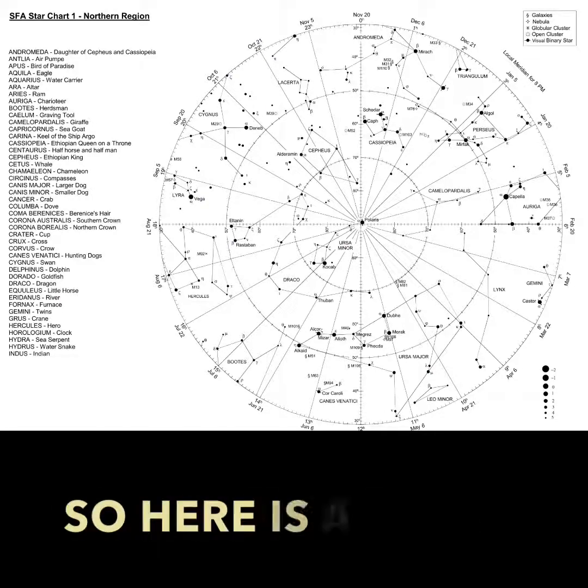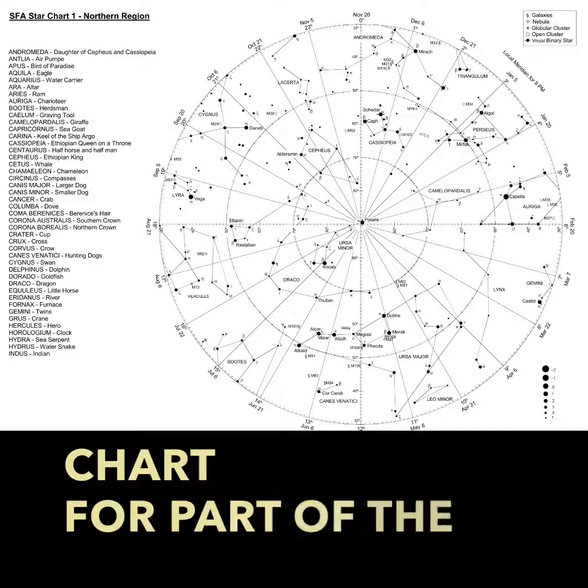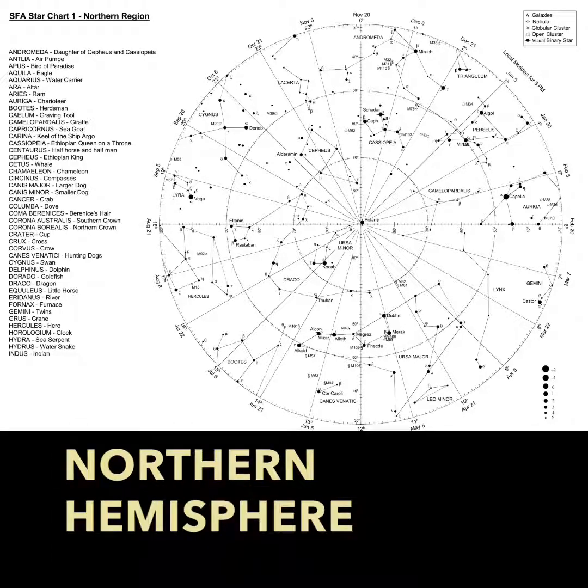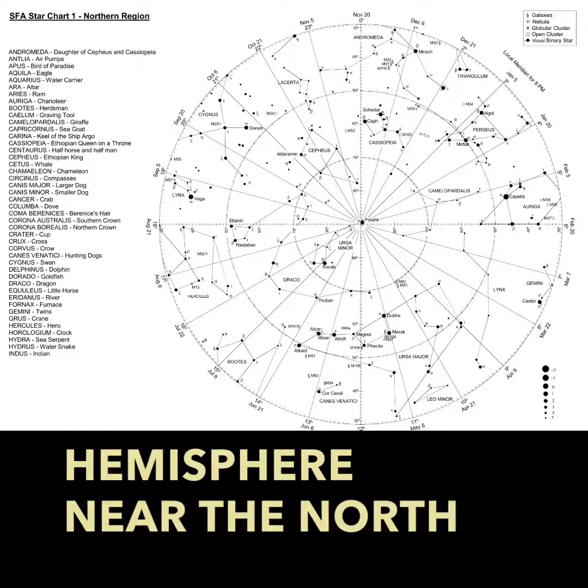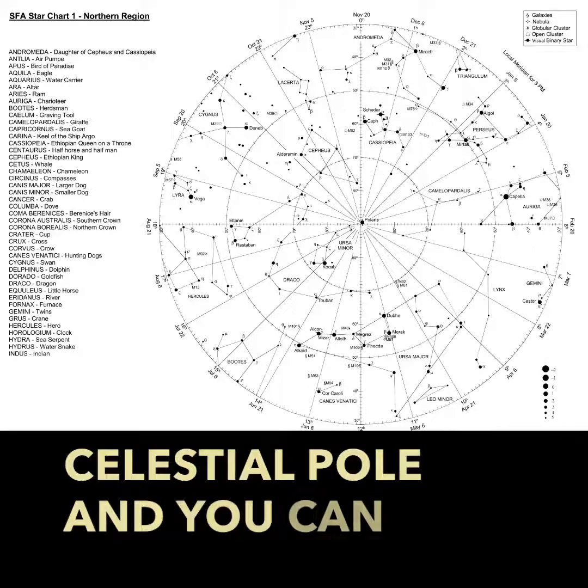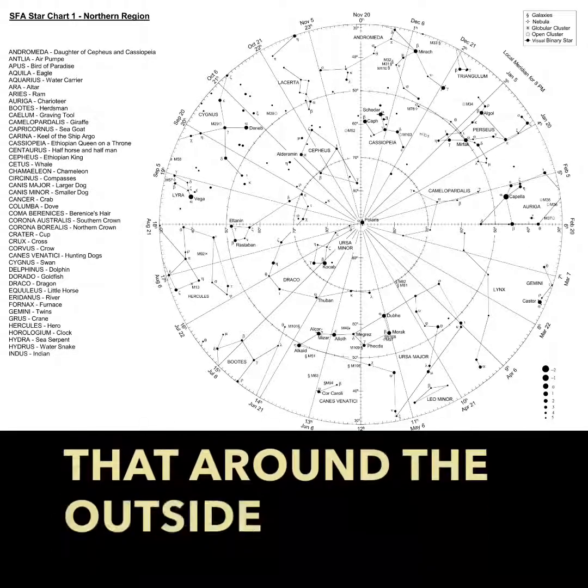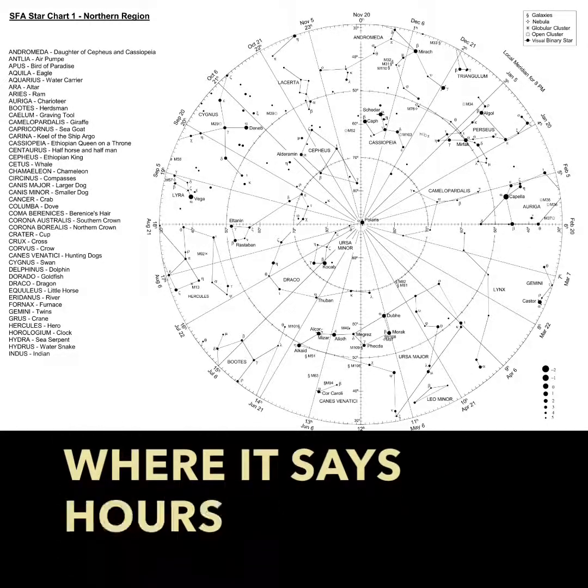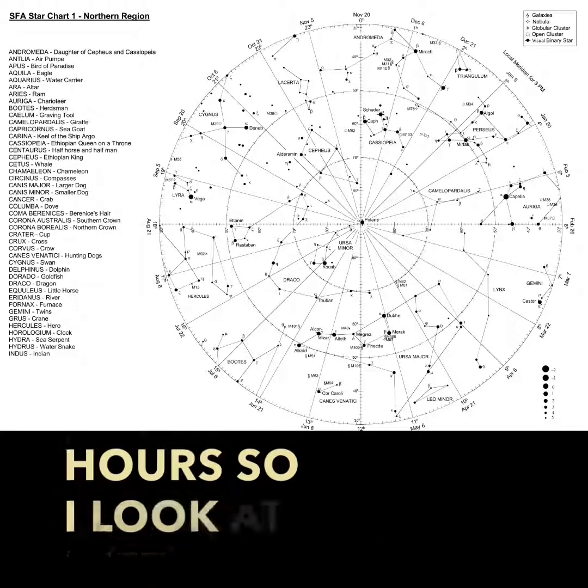So here is a star chart for part of the northern hemisphere near the north celestial pole. And you can see that around the outside you can see where it says hours. So look at the left hand side and it says 18 hours.